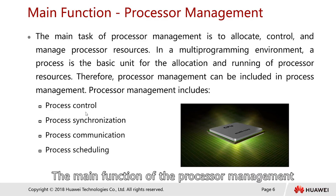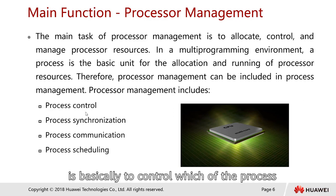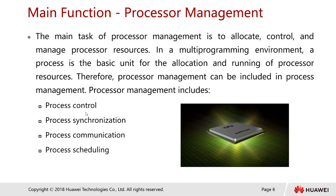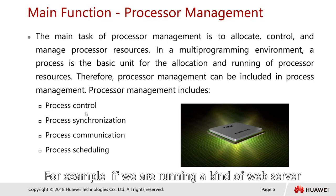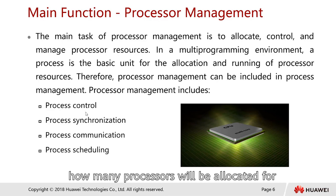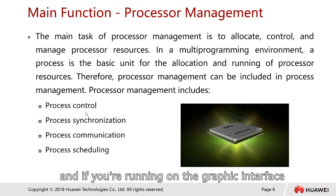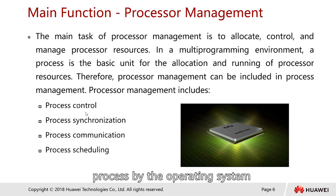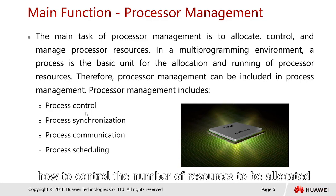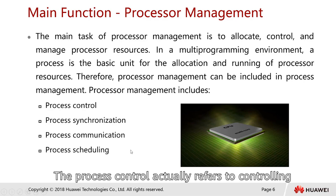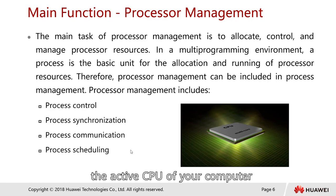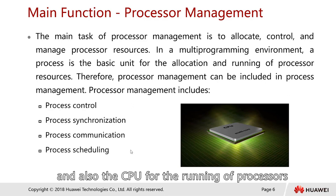For process control, the main function is to control which process will be allocated to a certain software or program. For example, if we are running a web server, how many processes will be allocated for the web server? If we are running a graphical interface, it also uses some processes by the operating system. The operating system has to know how to control how many resources are to be allocated. Process control refers to controlling and managing the resources — specifically the CPU — for the running processes.